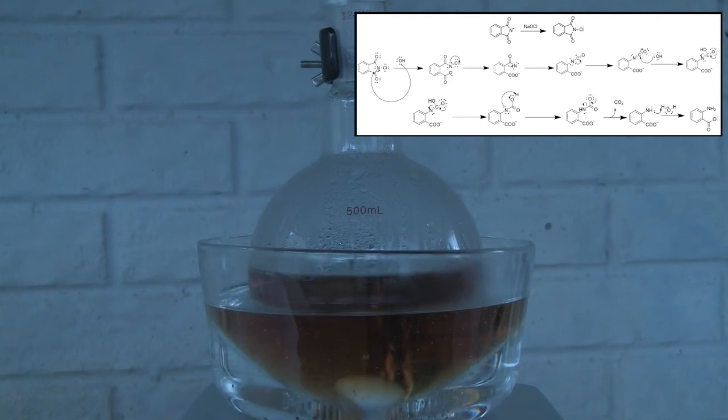In the basic conditions, a lone pair from the hydroxide ion attacks the carbon of the carbonyl and breaks the bond between the nitrogen and the carbon, forming the carboxylate of the anthranilic acid.